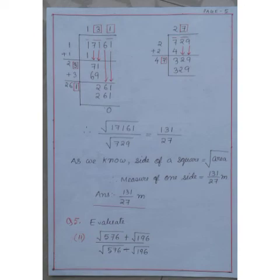Now, question number 5. Root over 576 plus root over 196 divided by root over 576 minus root over 196.